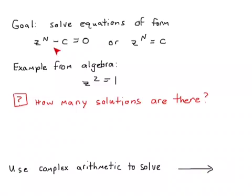Our goal is to solve equations of this form, which we can write as z to the n is equal to c, where c in general is some complex number. The easiest example we have from algebra is the equation z squared is equal to one. There are two solutions: z is equal to plus one, and z is equal to minus one.